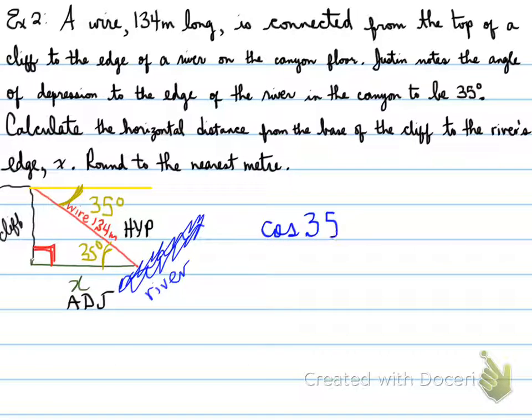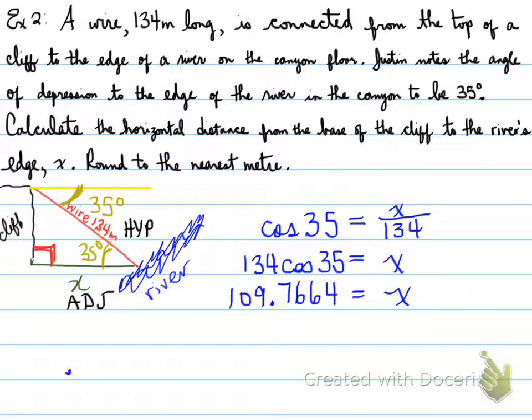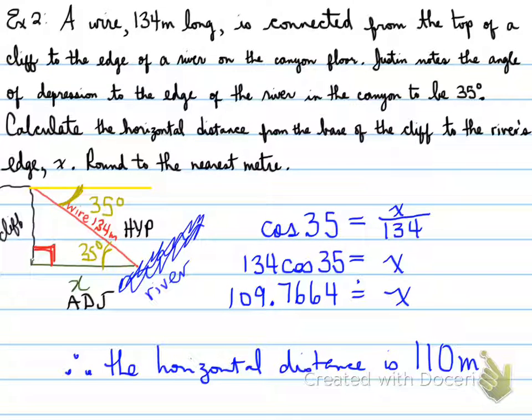134 is our hypotenuse. Cosine of 35, why are we using cosine? Well, adjacent and hypotenuse is the CAH part of SOHCAHTOA. So we use cosine of 35 is equal to x over 134. That means that x is equal to 134 times cos 35. That means x is equal to 109.7664.